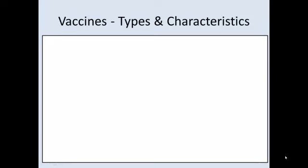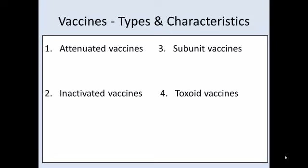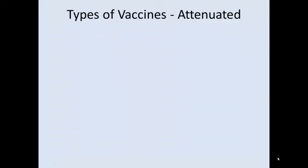Now let's talk about the different vaccines and their characteristics. There are five types of vaccines I want you to know for the exam — the book covers more, but I'm not going to test you on them. The first is attenuated vaccines, the second are inactivated or killed vaccines, the third are subunit vaccines, the fourth are toxoid vaccines, and then a brand new one: nucleic acid vaccines.